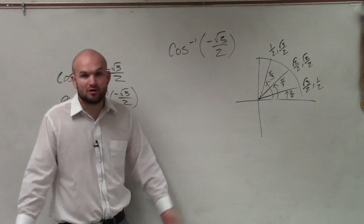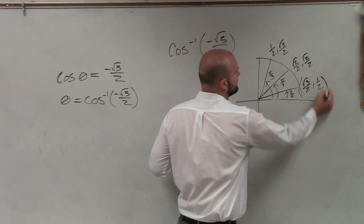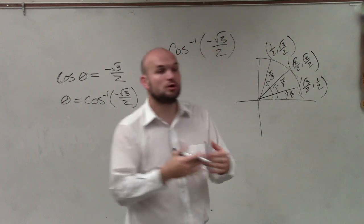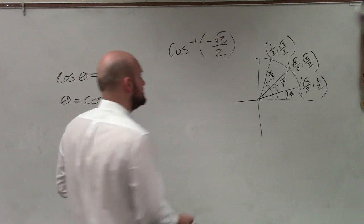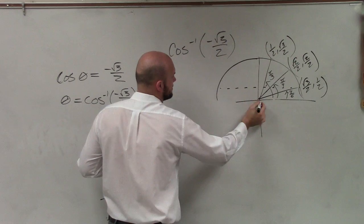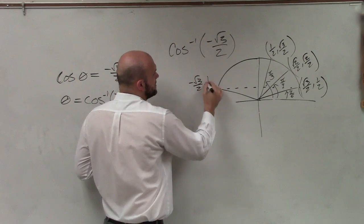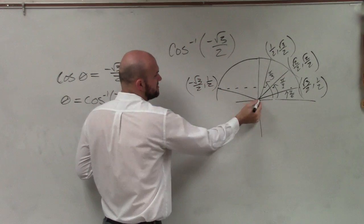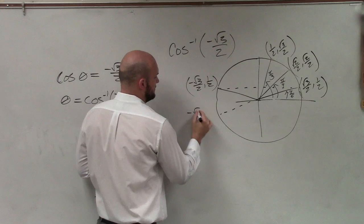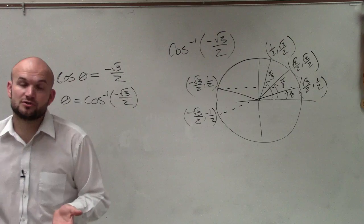We're asking when the cosine is going to be negative. When is the x-value going to be square root of 3 over 2? There's really only one angle, which would be pi over 6. However, we're looking for when it's negative. In the second quadrant, the cosine would be negative — that point is negative square root of 3 over 2, 1 half. It would also be negative in the third quadrant: negative square root of 3 over 2, negative 1 half. So we need to determine what those two angles are.